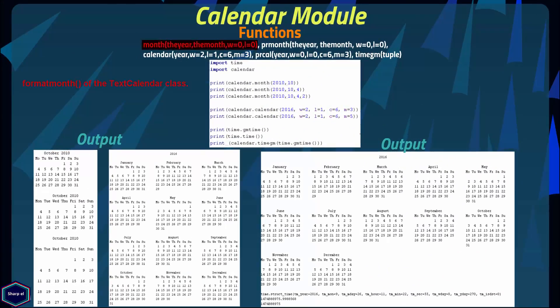The month() function calls the format_month method of the TextCalendar class and returns a month's calendar in a multiline string. It takes four arguments: a year, a month, argument w for date column width, and argument l for lines per week — by default both are set to zero. In one example I call month() without the formatting arguments, then I set w to 4, and in the next example I set l to 2, and you can see the difference.